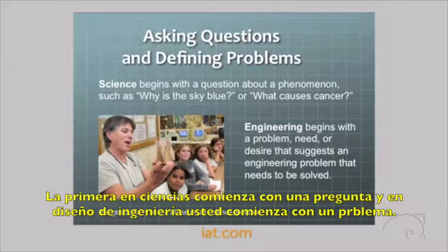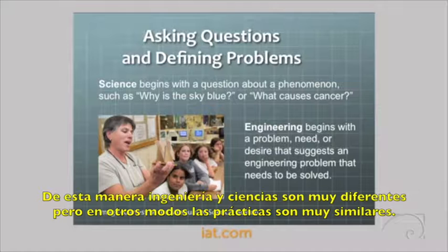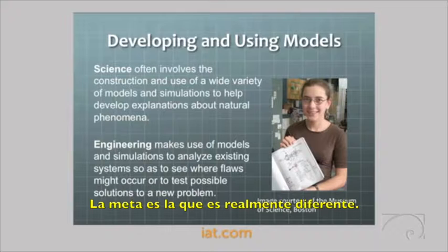Here is engineering design as a practice. In science, you start with a question. In engineering design, you start with a problem — in this way, engineering and science are very different. But in most other ways, the practice is really similar. The goal is what makes the difference. The second practice is developing and using models. Scientists develop a model to better understand something, to represent how they think they understand it.